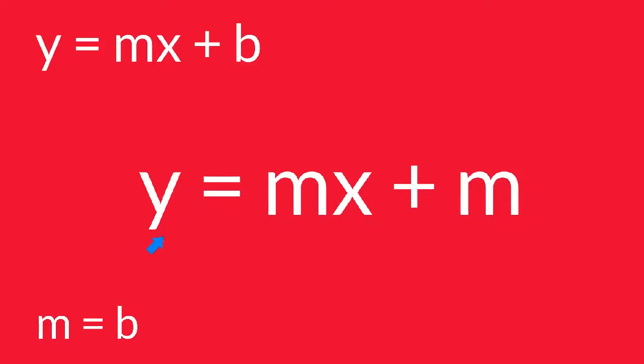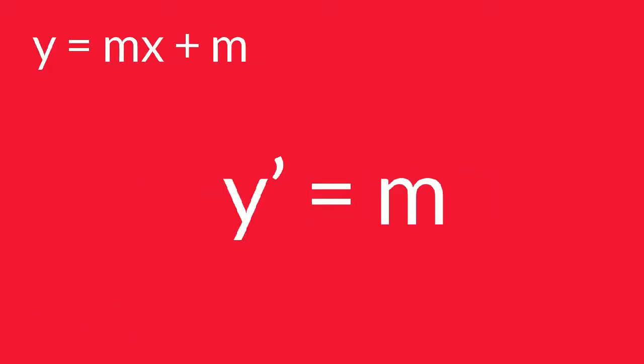Now, differentiate this equation once because there is only one arbitrary constant, which is m. This is the first derivative, but still the arbitrary constant m is present in the equation.